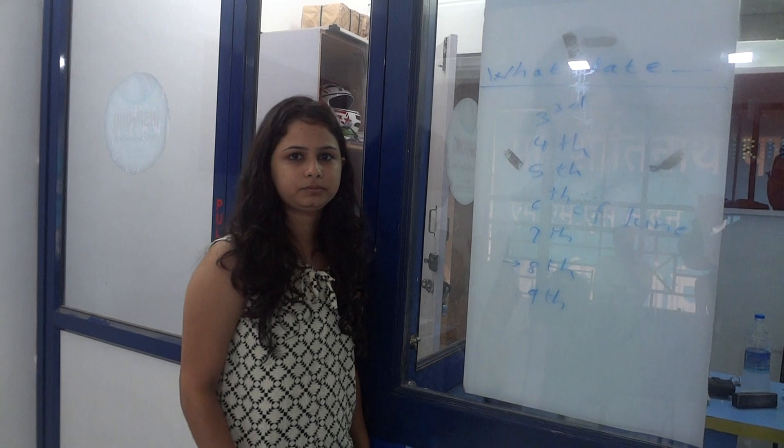What date was yesterday? It was 8th of June yesterday. What date was the day before yesterday? It was 7th of June.